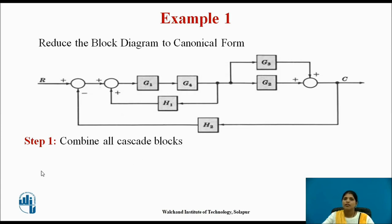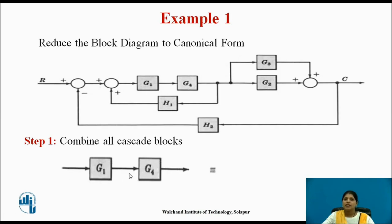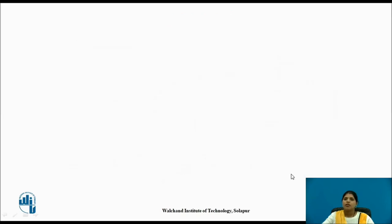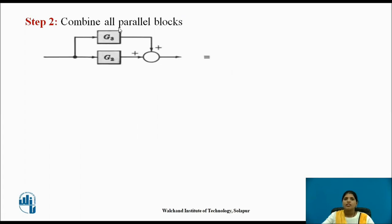Step 1: combine all cascade blocks. Here G1 and G4 are connected in series, so they get multiplied directly — G1 into G4. Step 2: combine all parallel blocks. Here G2 and G3 are in parallel, so they get added directly — G2 plus G3.